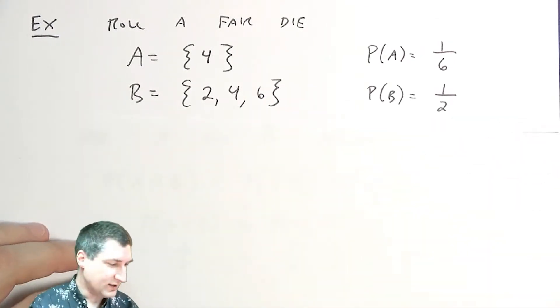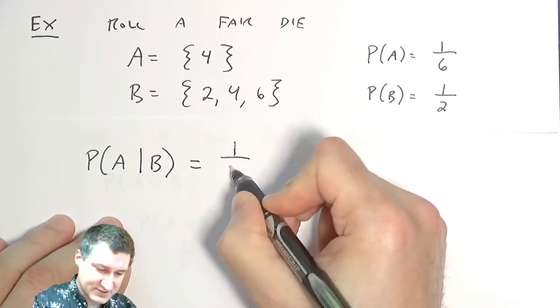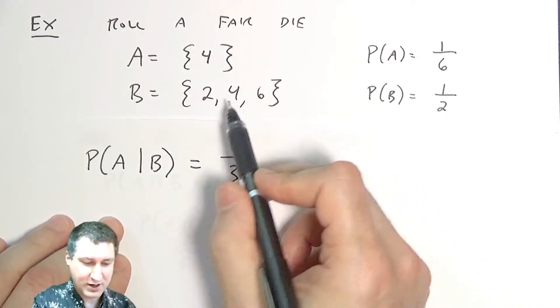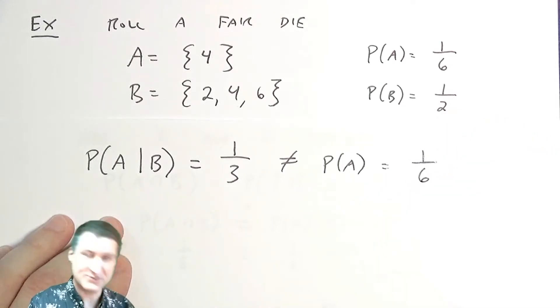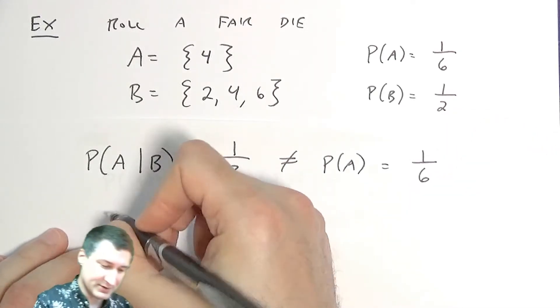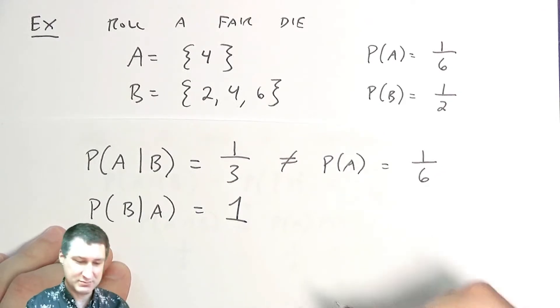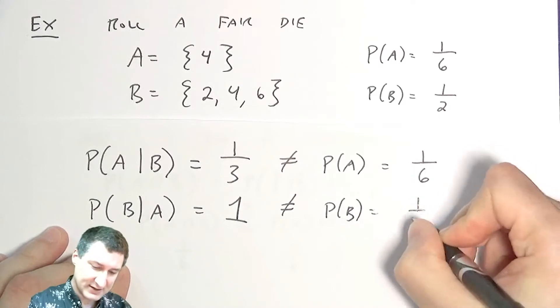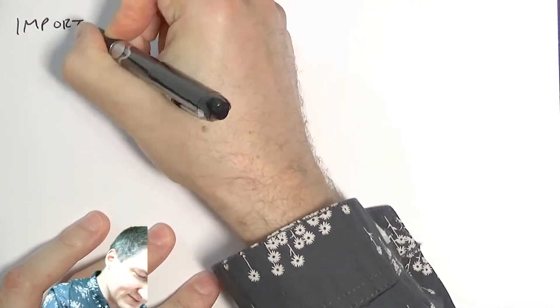Another way to see this using conditional probability: P(A|B) is 1/3, because four makes up one out of three of the even outcomes, and that's not equal to P(A) = 1/6. Similarly, P(B|A) is 1, since if A occurred then we rolled a four which is in B, and that's definitely not equal to P(B) = 1/2. There are lots of ways to show these events are not independent.